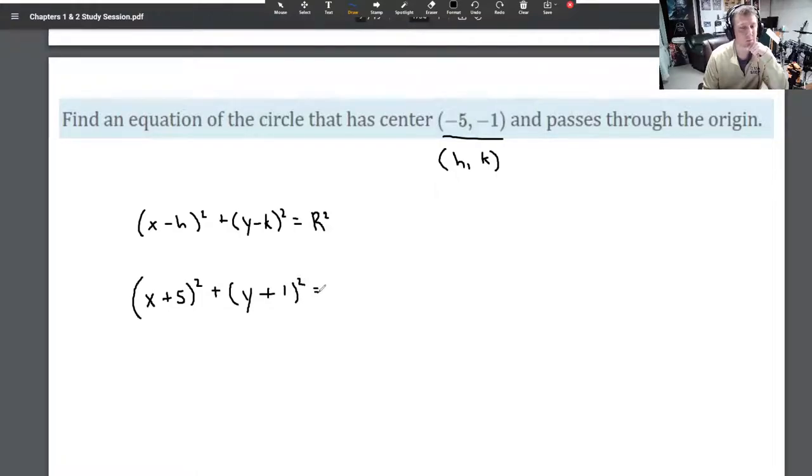The only problem is finding the radius from the origin. So negative 5 comma negative 1 is the center. Here's the center of our circle, and it passes through the origin right there.